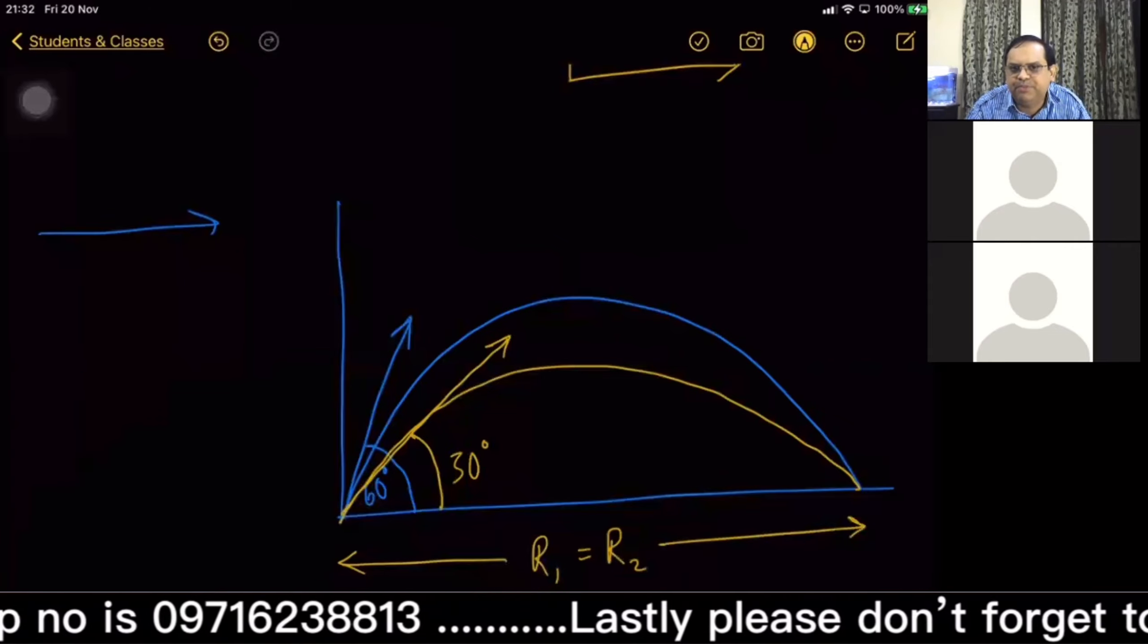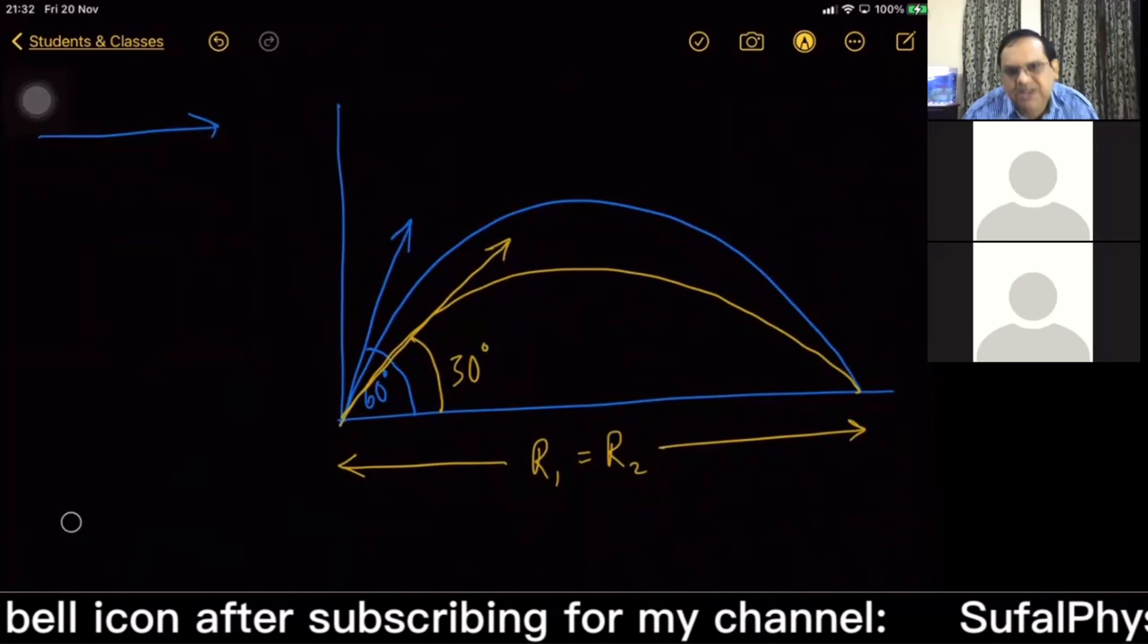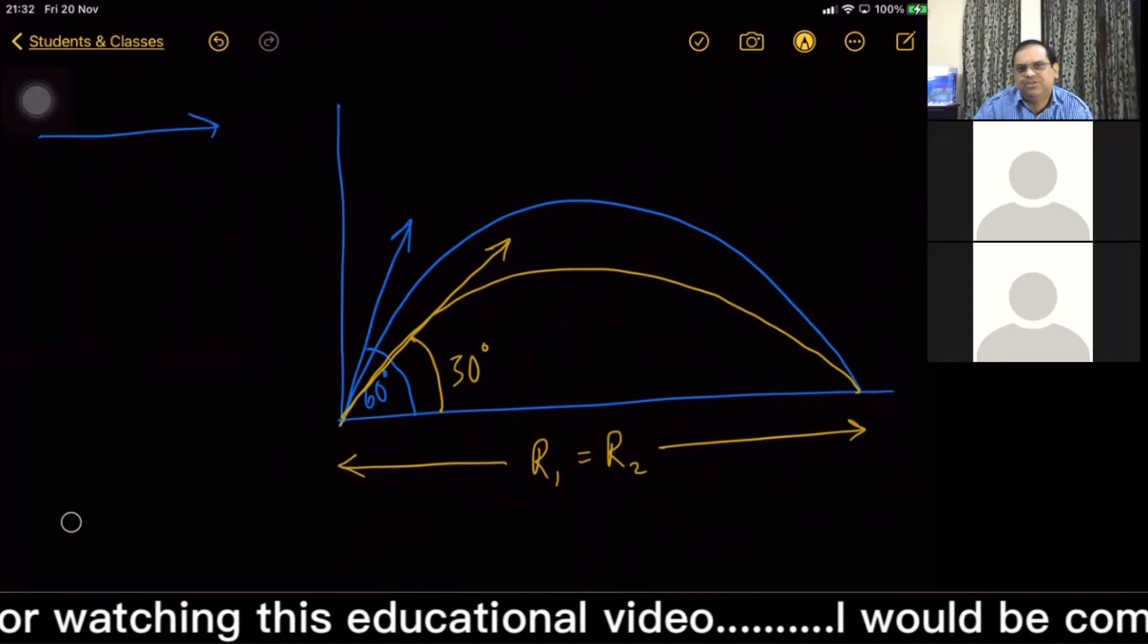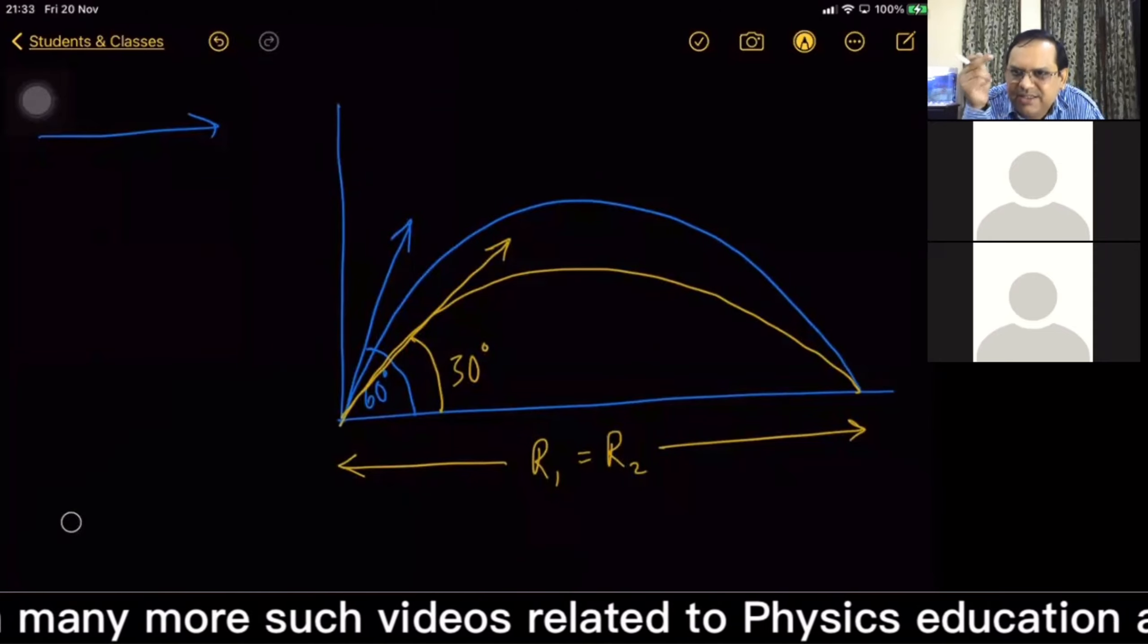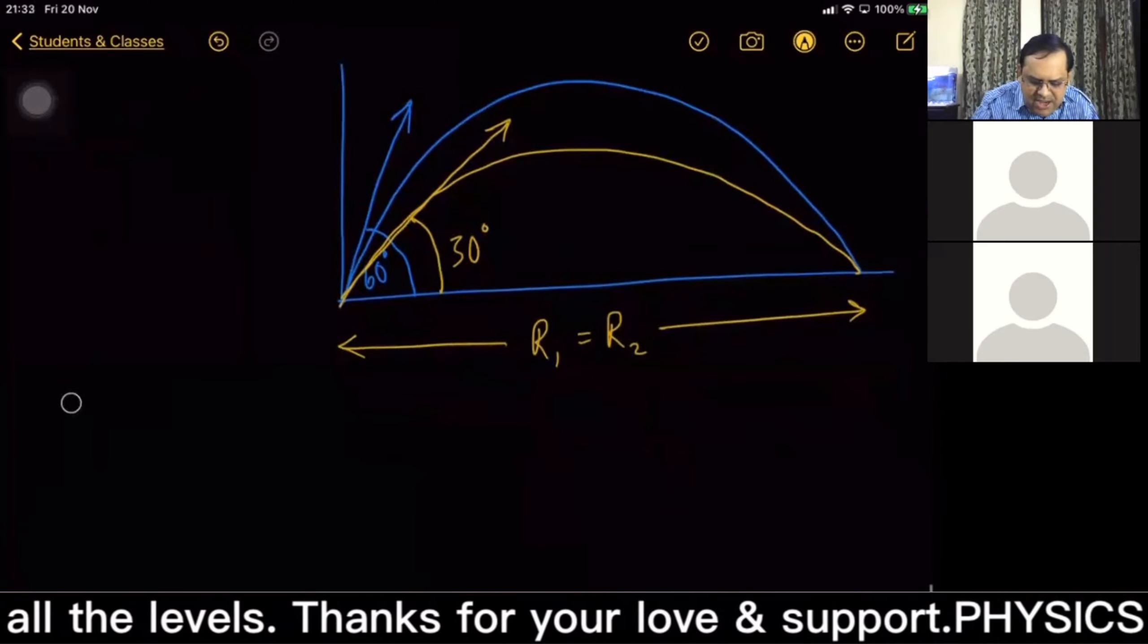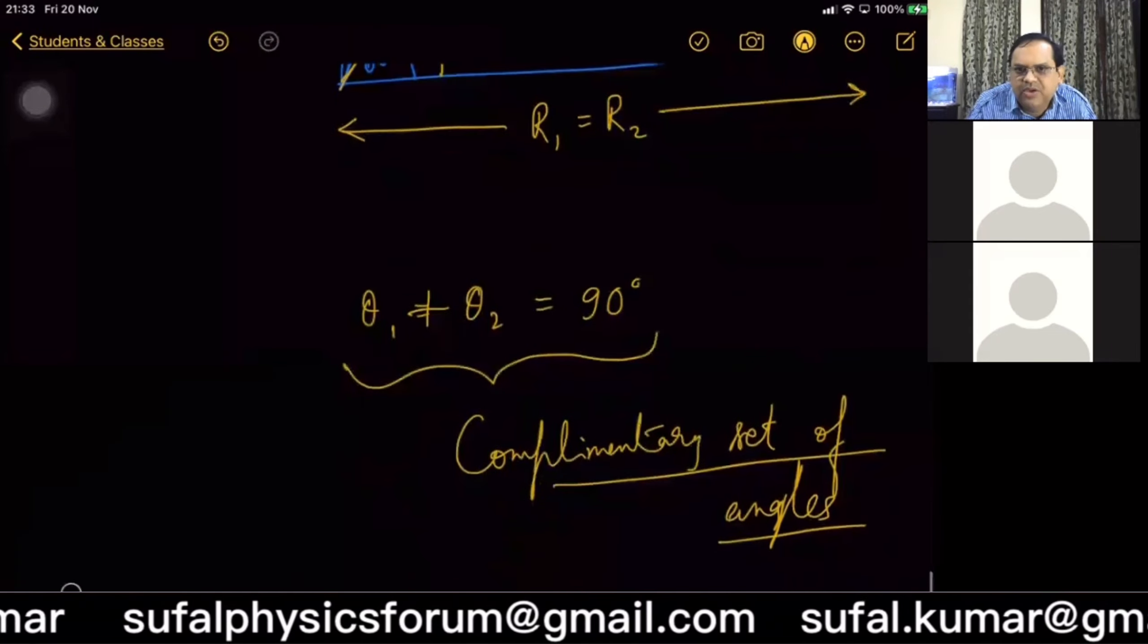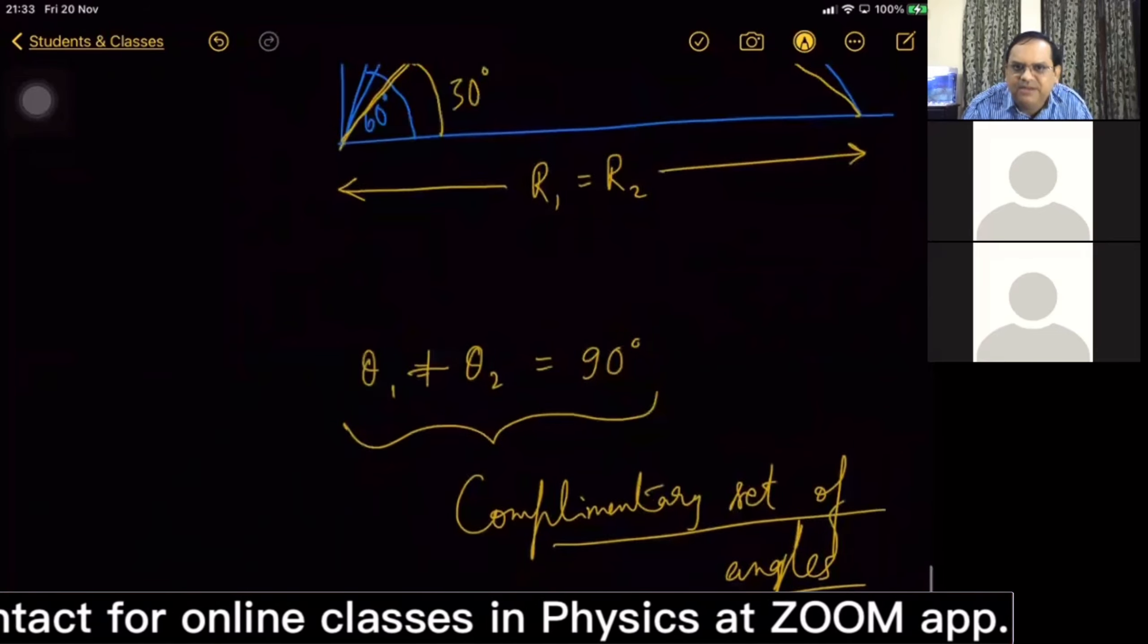Suppose this corresponding angle of projection is 60°. Now another one, matlab R1 = R2. There are two projectiles in the same diagram. Both have covered same horizontal range, but angles of projection are different. Is there any well-defined relation between these two angles? Yes, there is. If θ1 + θ2 = 90°, that means complementary.